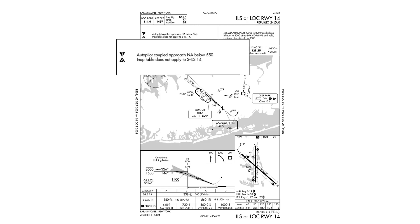Next is the notes section. This can be pretty lengthy, but here we see that an autopilot coupled approach is not allowed below 550 MSL, and that the inoperative equipment table, found in the terminal procedures publication, doesn't apply for the ILS. You also have two black triangles facing opposite ways: 'T' means there are non-standard takeoff minimums for the runway, and 'A' means the requirements to use this airport and approach in your alternate planning on the IFR flight plan are non-standard. In both cases, consult the airport page in the TPP.